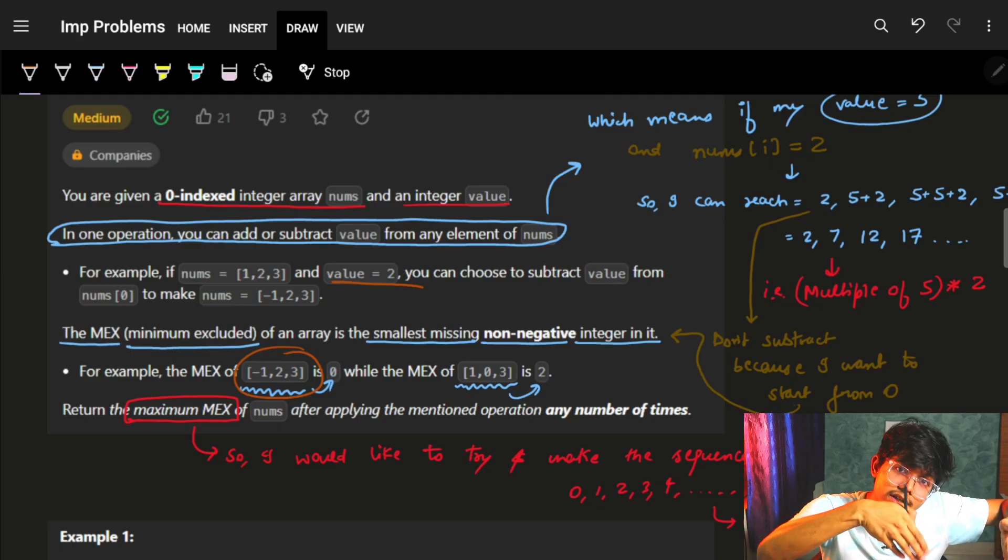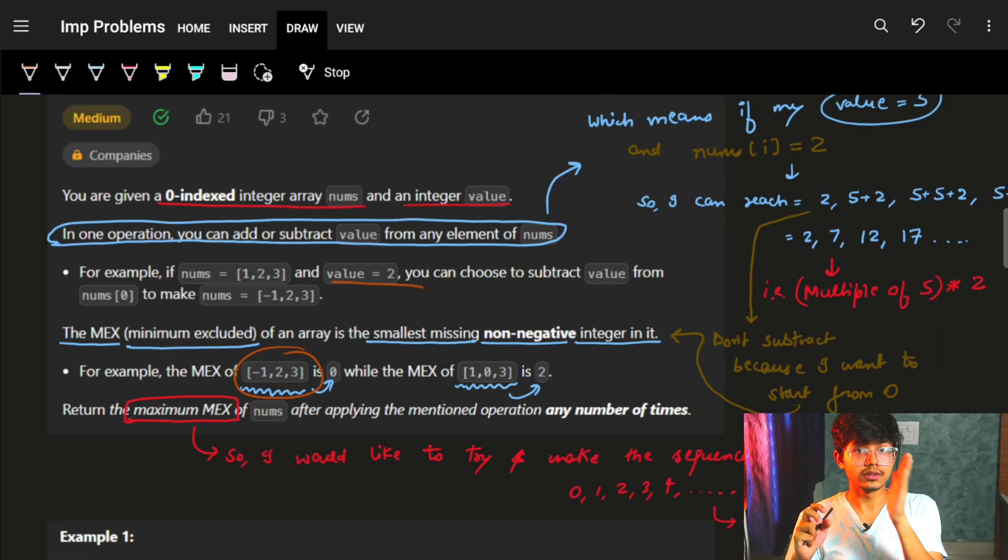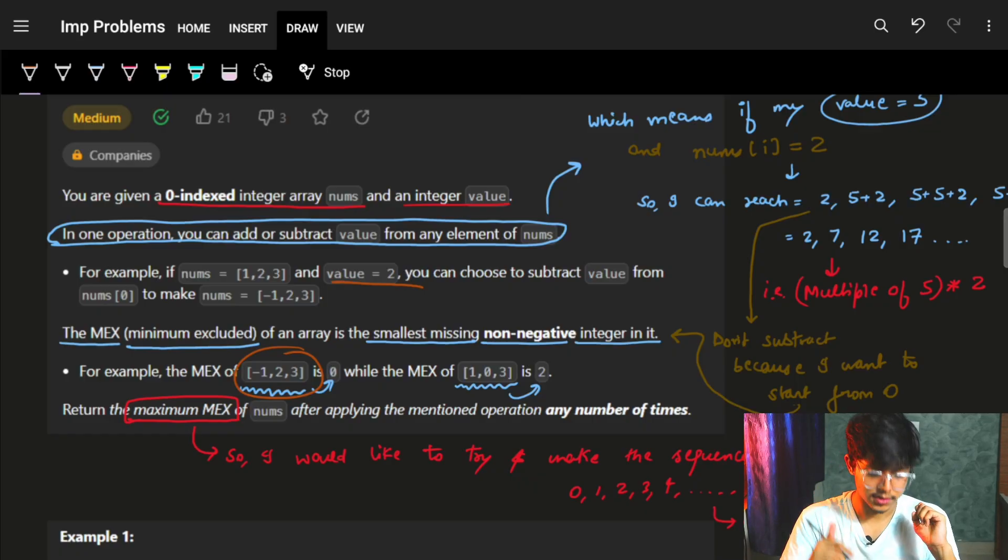Because I start from 0 itself. I am not concerned about the negative values. I am concerned only about from 0, what is the next element which is missing. Because after 0, it comes 1, 2, 3, 4, and so on. So what's the next missing value that I am concerned about.